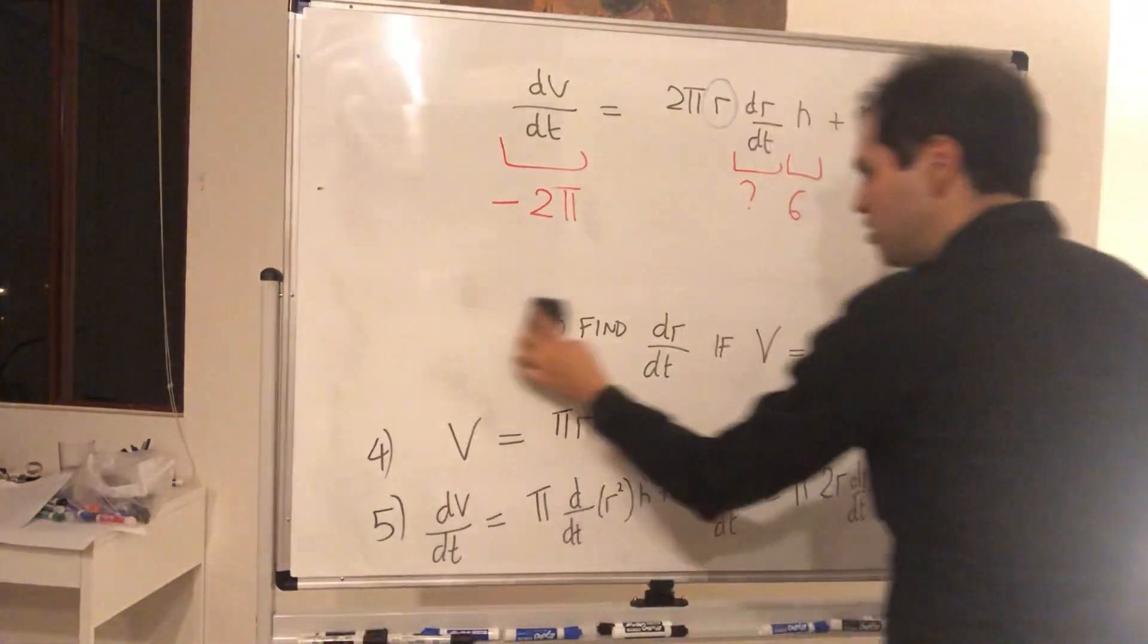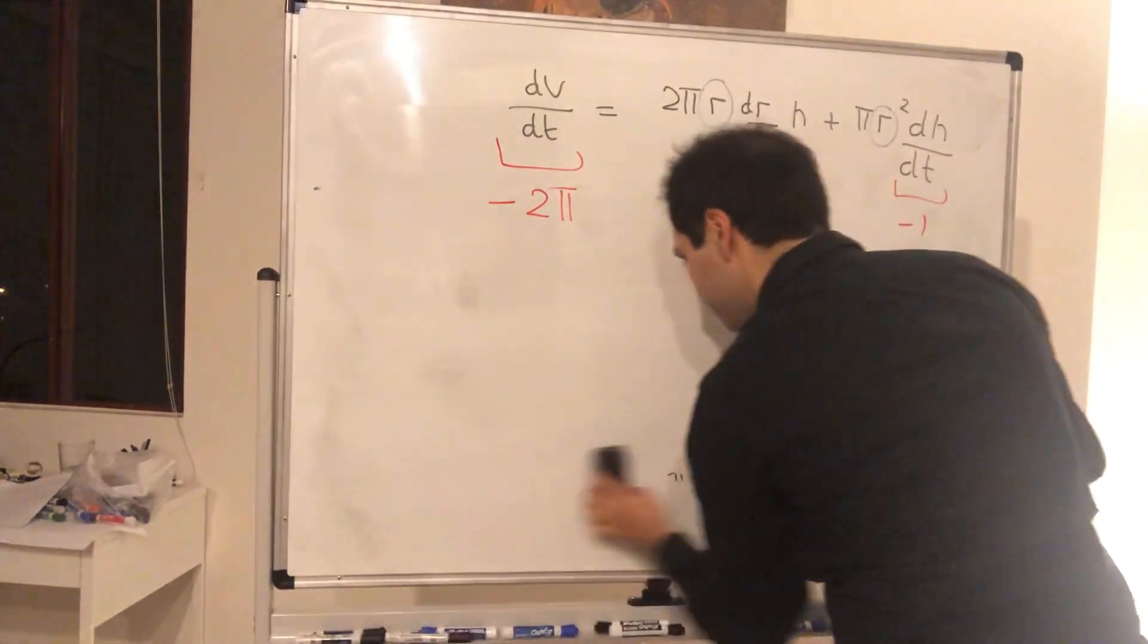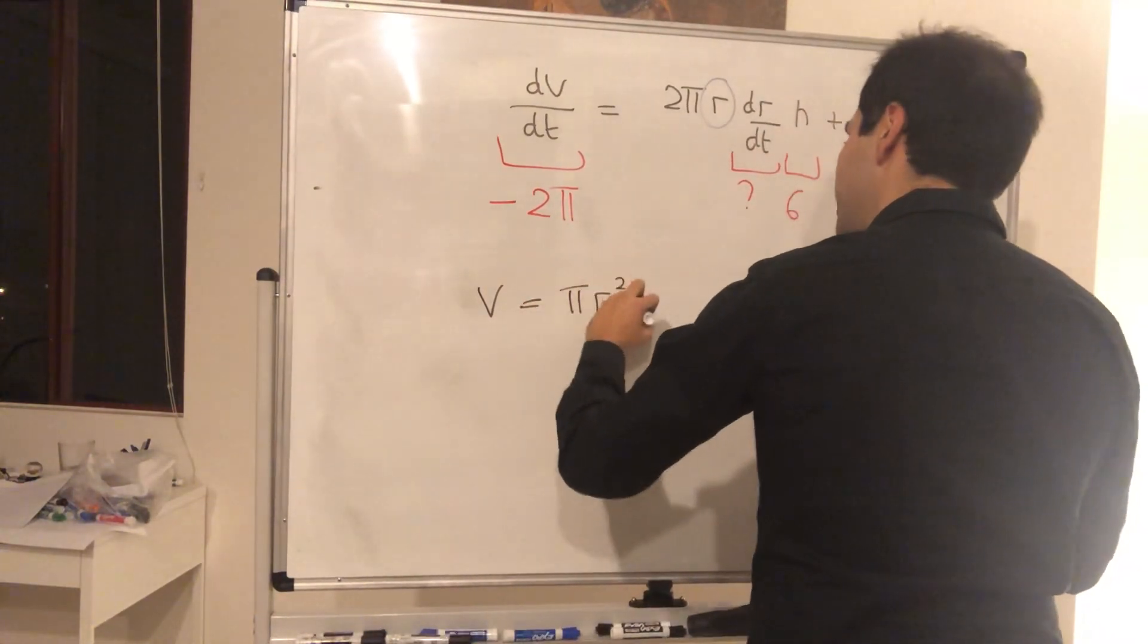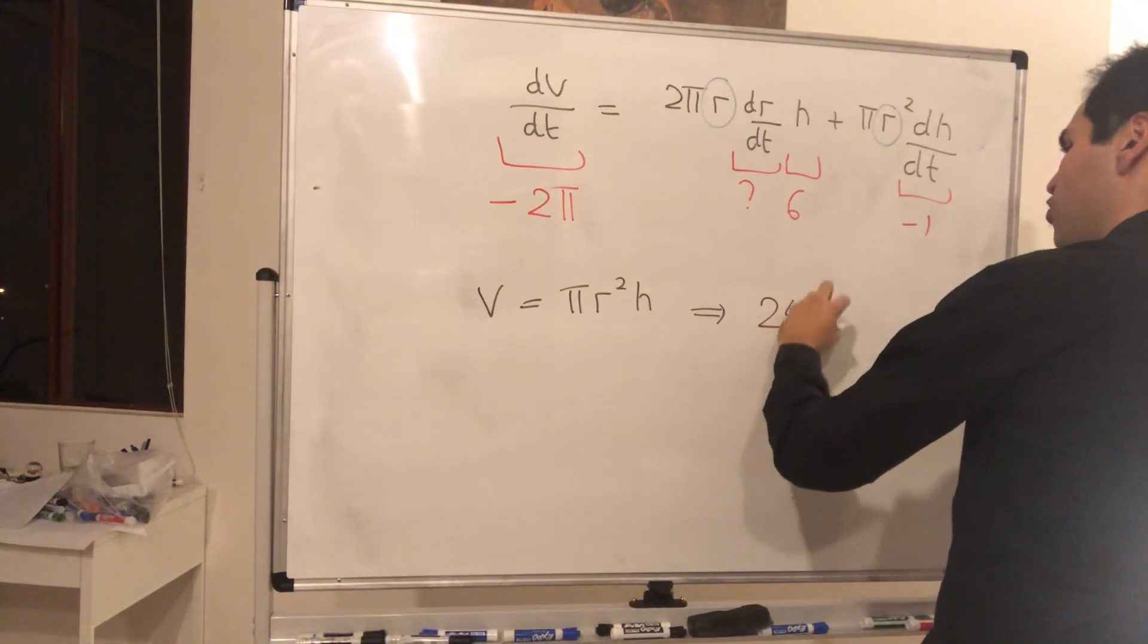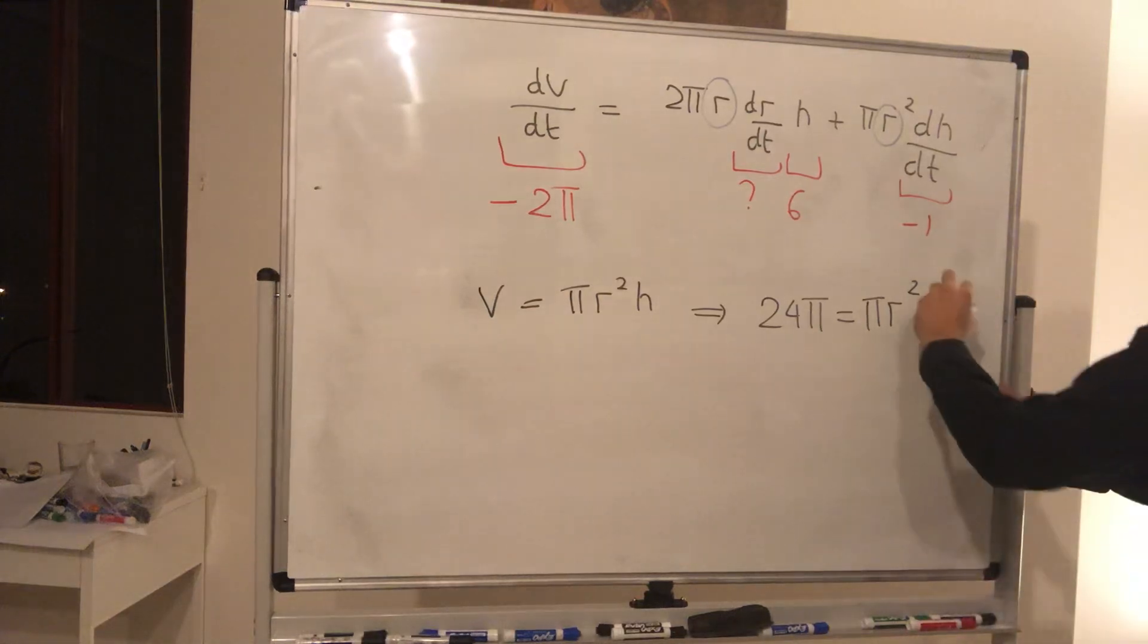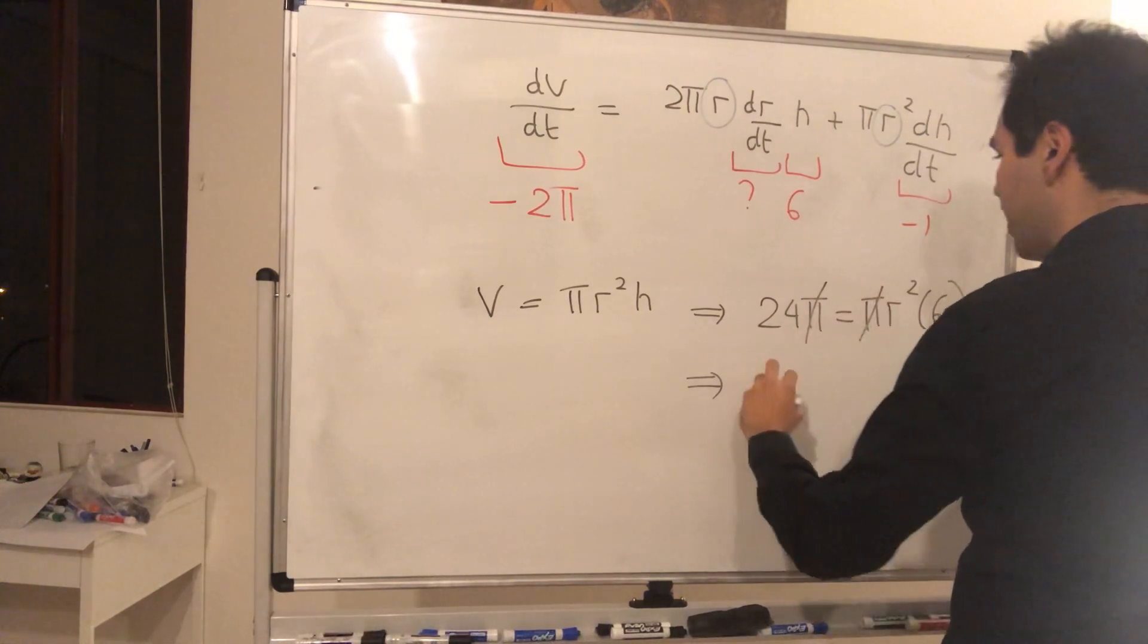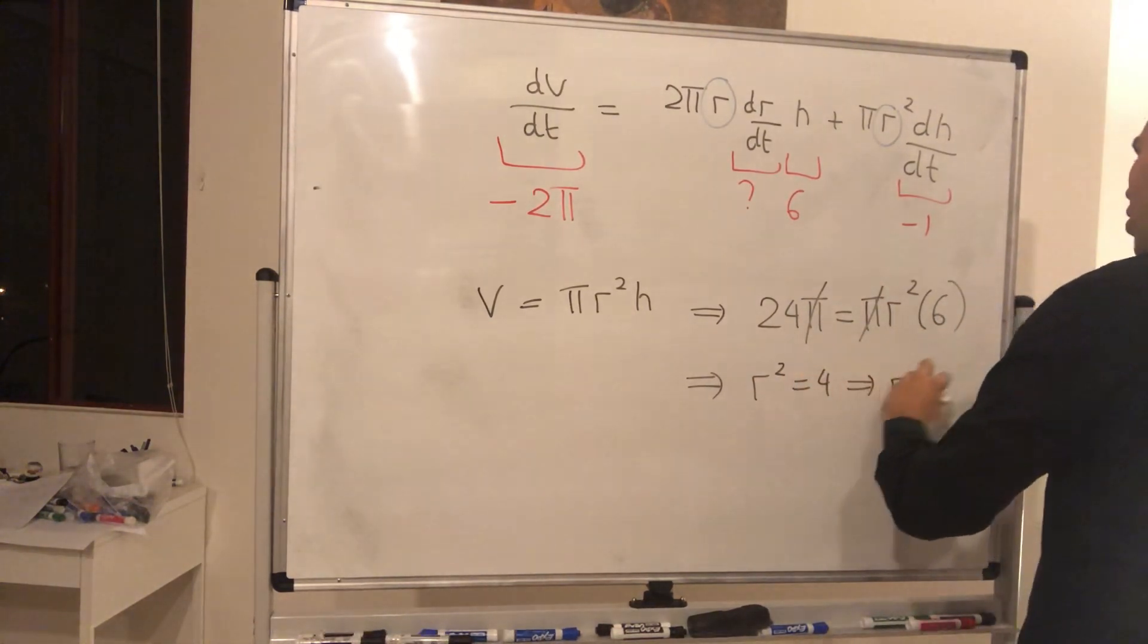And for this, we just need to use the volume formula again. So what do we know? We know that the volume is πr²h. But in this case, the volume was 24π, and the height is 6. So 24π is πr² times 6. So you cancel out the π, and you essentially get r² equals 4, and so r equals 2.